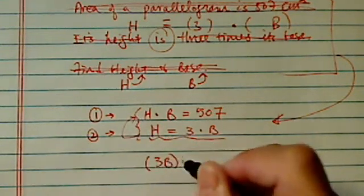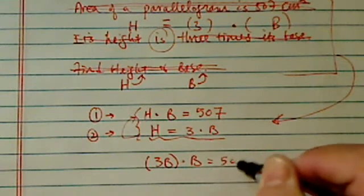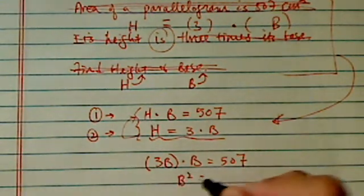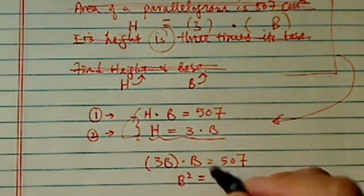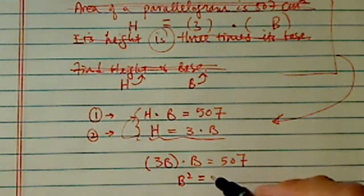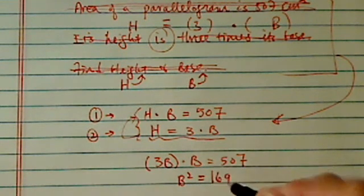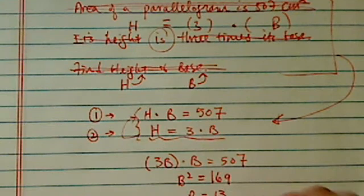We have 3b times b equal to 507. So b squared is equal to 507 divided by 3. I have 169 here. So b is equal to 13.